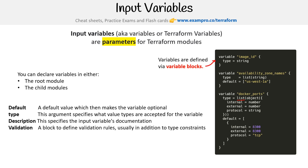There is a validation block to define validation rules, usually in addition to type constraints. We don't see that on the right-hand side here, but the idea is that it reduces human error when entering information. You can also have sensitive, which limits terraform UI output when the variable is used in the configuration. We will cover sensitive a lot more in this course outside of just this one slide.